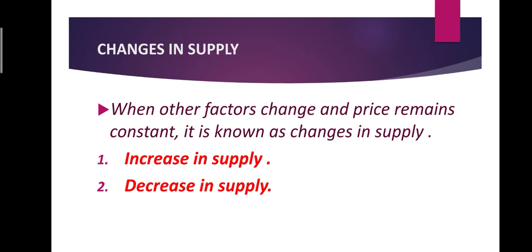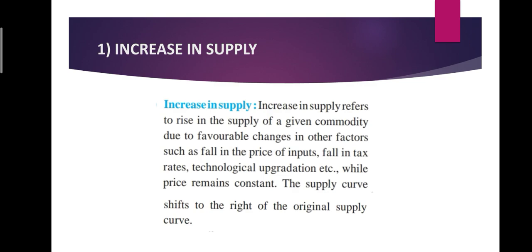Changes in supply are of two types: one is increase in supply and the other is decrease in supply. First, let's look at increase in supply. Here, price remains constant but other factors show changes. When the changes in other factors are favorable, supply increases — this is called increase in supply. Increase in supply refers to a rise in the supply of a given commodity due to favorable changes in other factors such as fall in the prices of inputs, fall in tax rates, technological upgradation, etc. The supply curve will shift to the right of the original supply curve.